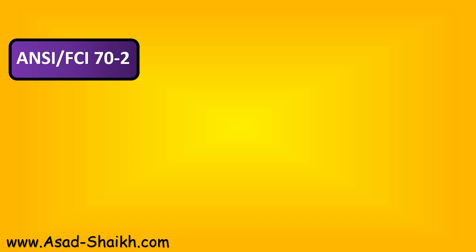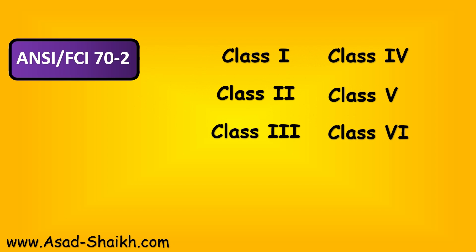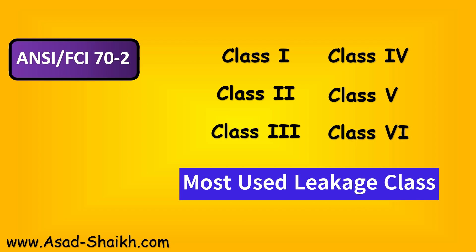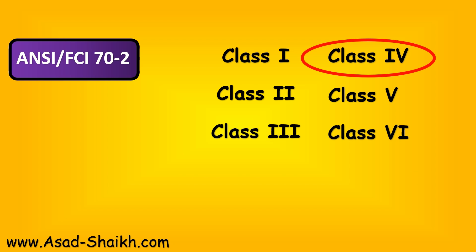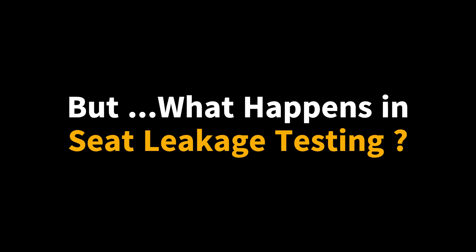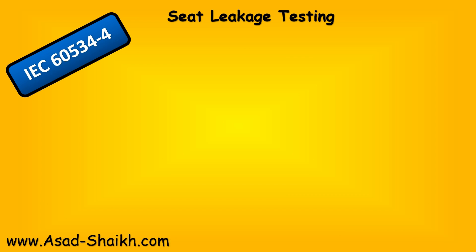For ANSI FCI 70-2, leakage classes are divided into 6 classes: class 1, 2, 3, 4, 5, and 6. This remains the same for both standards. The most used classes are usually class 4 and class 6 for the majority of cases. Let's look at an IEC definition which helps us understand the nomenclature used when a valve is seat-tested. That will help us understand what happens in seat leakage testing.